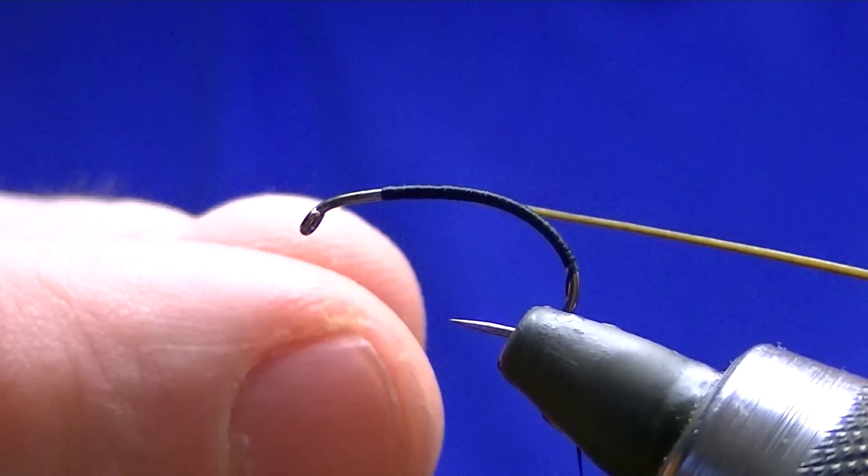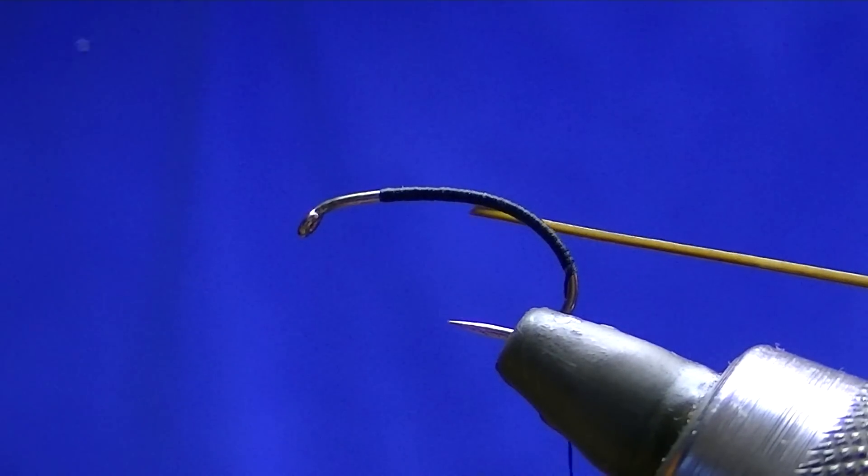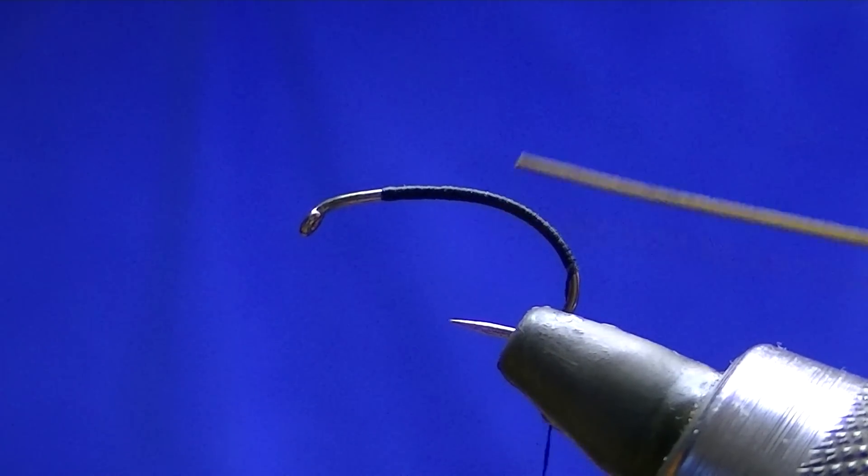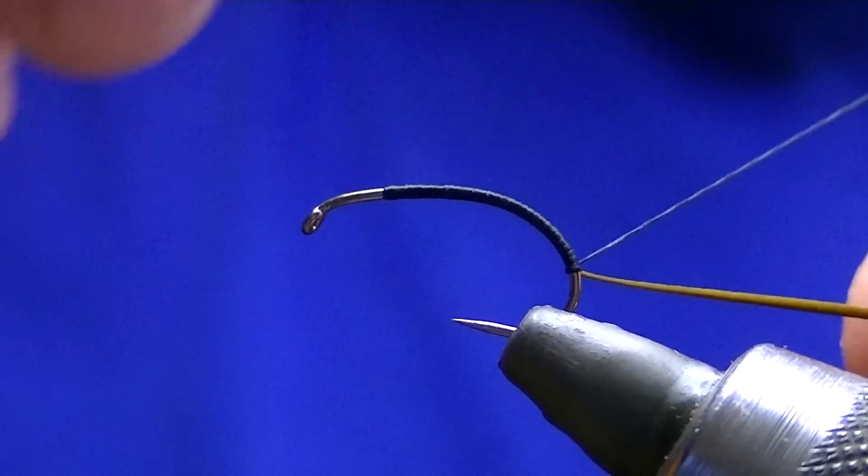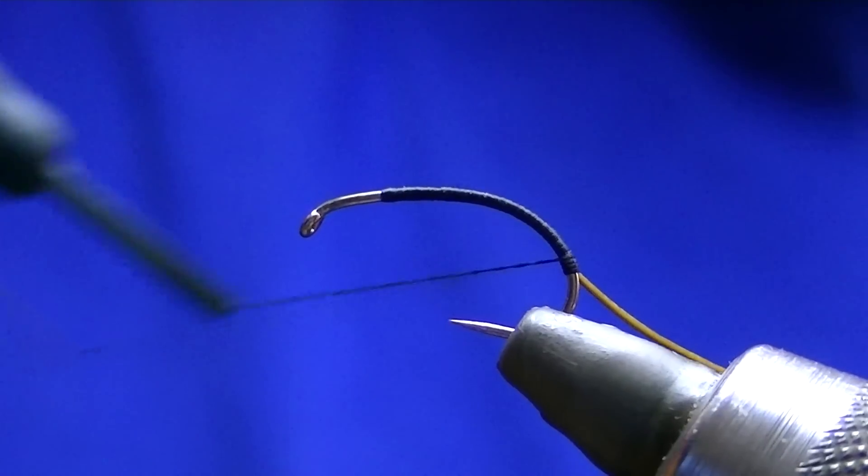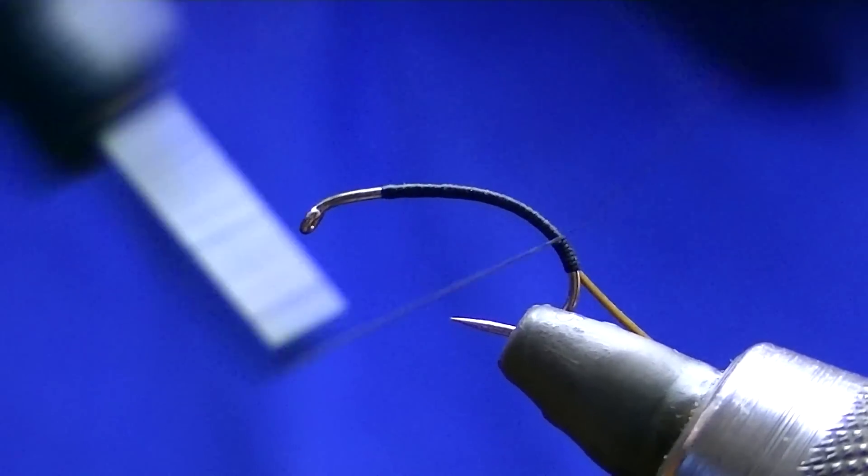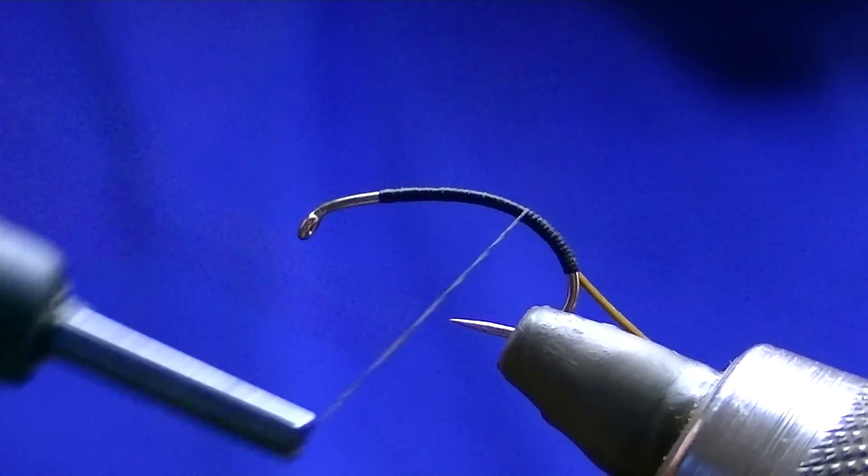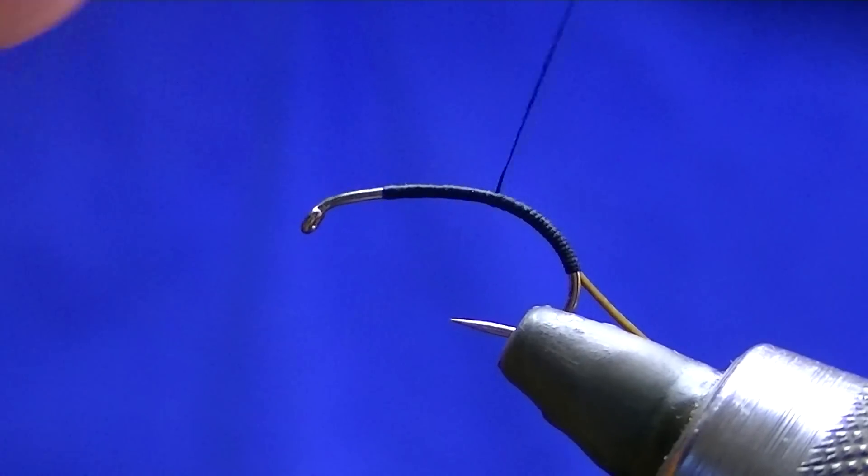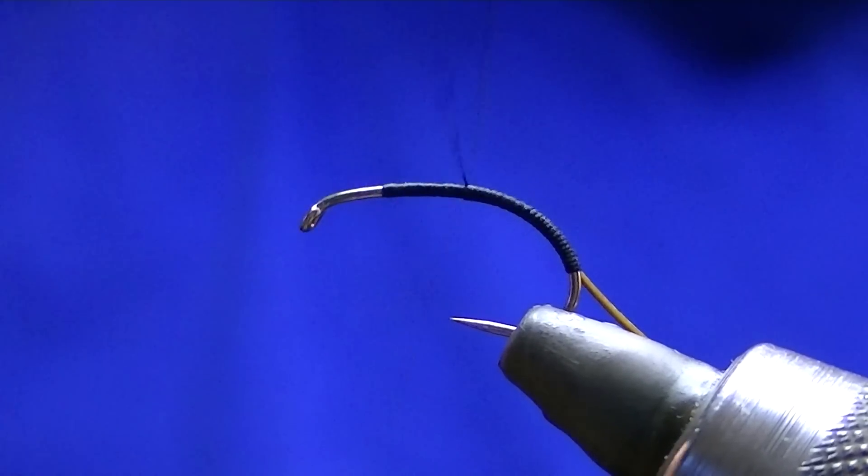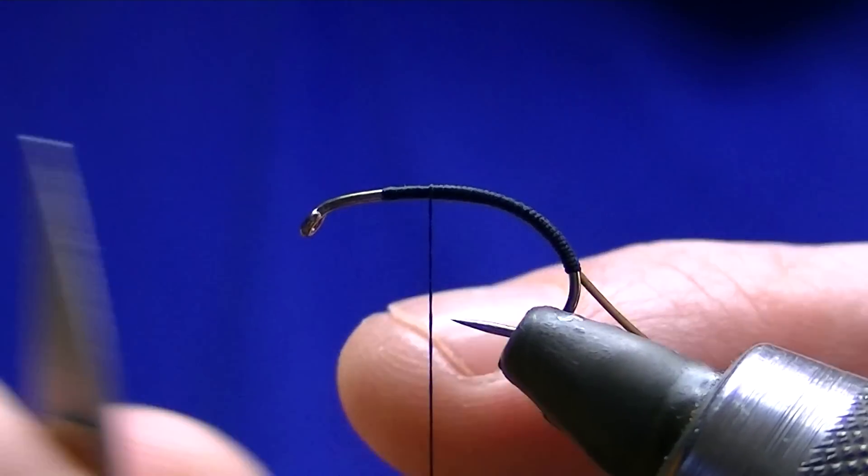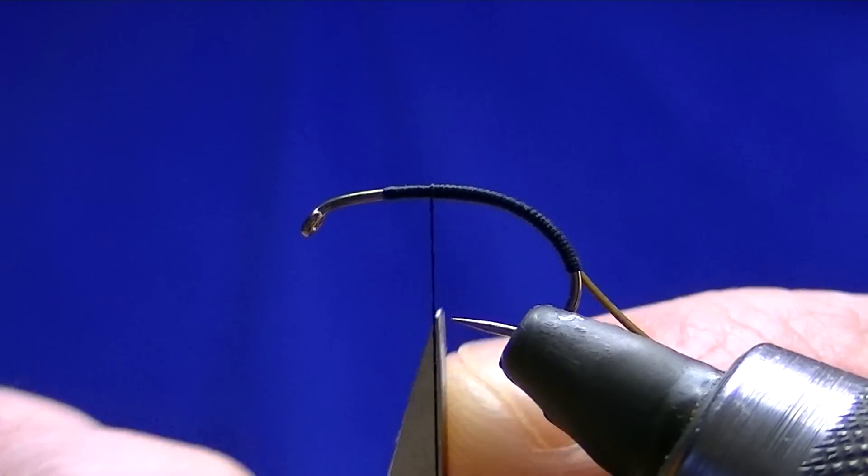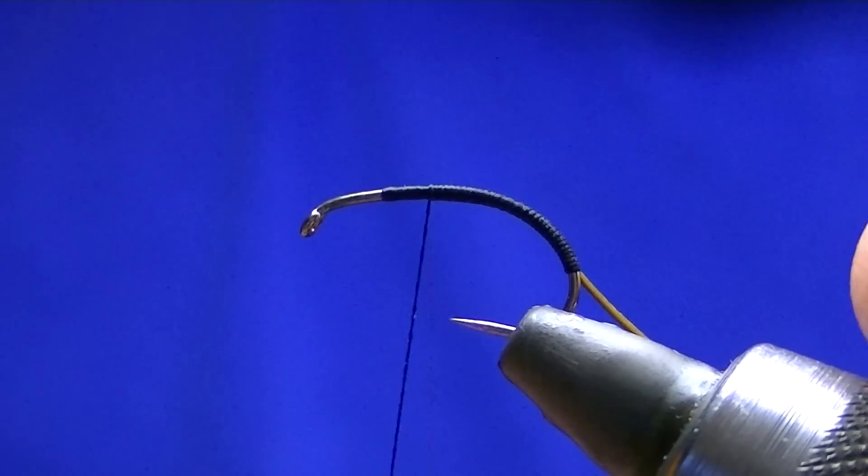Now I've got a honey olive strip quill here. It's already been pre-stripped as you can see. I'm tying it in at the thick end. Catch it in, a touch of turns. Bring the thread back up the way. Stopped just in front of the point of the hook.